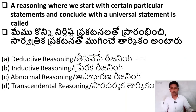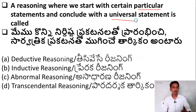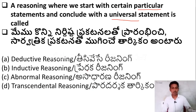Let us go to the next question. A reasoning where we start with certain particular statements and conclude with a universal statement — moving from particular towards the universal — is known as: Option A — deductive reasoning; Option B — inductive reasoning; Option C — abnormal reasoning; Option D — transcendental reasoning. The right answer is Option B — inductive reasoning.